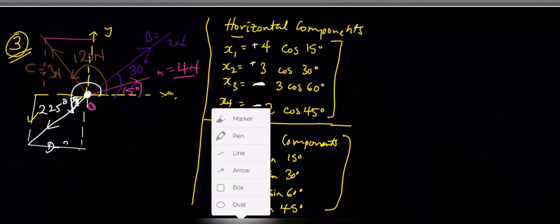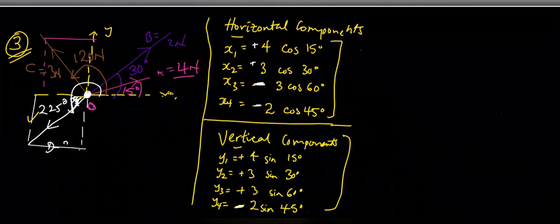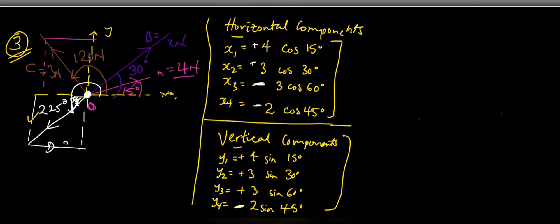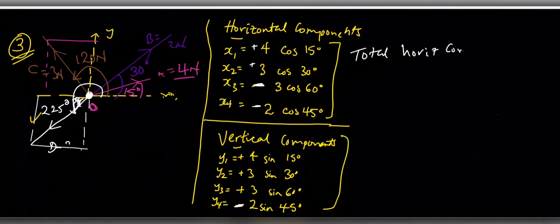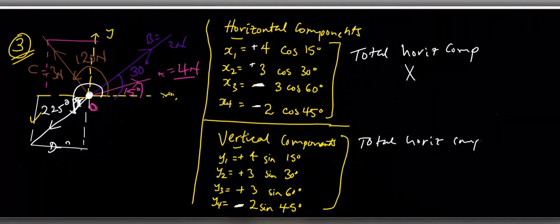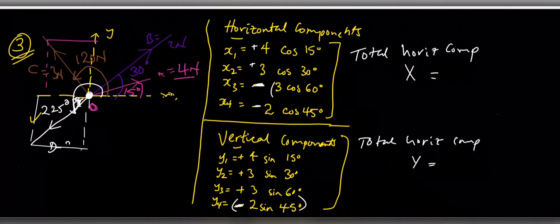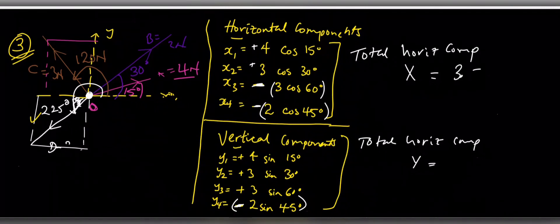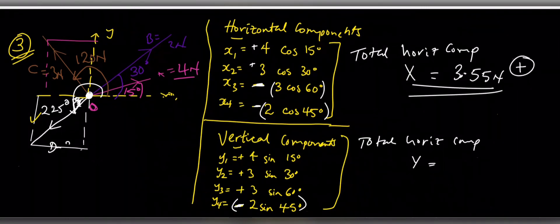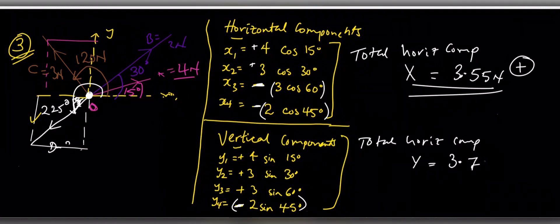We now find the sum of all horizontal components — entering them with their signs into the calculator — giving a total horizontal component X of positive 3.55 newtons. Summing all vertical components gives a total vertical component Y of positive 3.72 newtons.